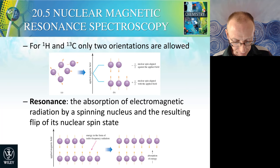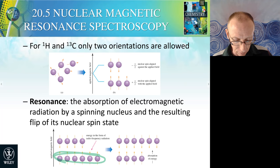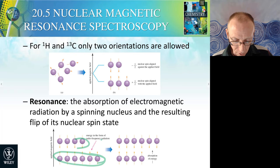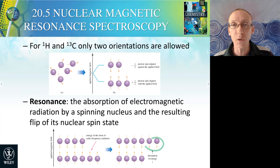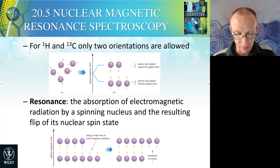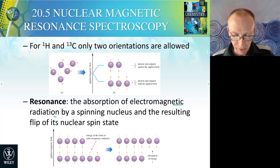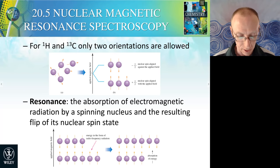In the presence of the applied magnetic field, the lower energy level is more occupied than the upper energy level. We put in radiofrequency radiation, and the nuclei absorb energy and go to the high energy state. We call that resonance — the absorption of electromagnetic radiation by these spinning nuclei.